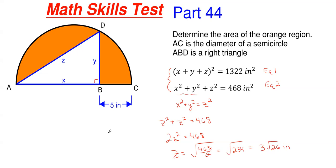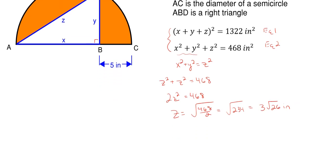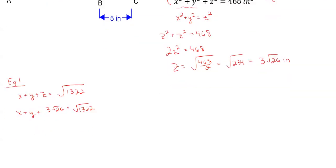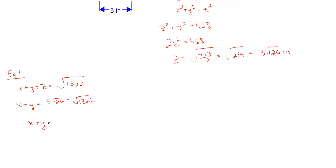I found Z but I'm really looking for X and Y, and I need Z in order to find X and Y, so I already have one of my unknown sides found. Let's go back and try to find X and Y. Starting with equation one, I'm going to square both sides to get rid of the square root, so X plus Y plus Z is going to be equal to the square root of 1322. Now plugging in 3 square roots of 26 for Z, I have X plus Y plus 3 square roots of 26 is equal to the square root of 1322. Taking the 3 square roots of 26 to the other side, X plus Y is equal to the square root of 1322 minus 3 square roots of 26.